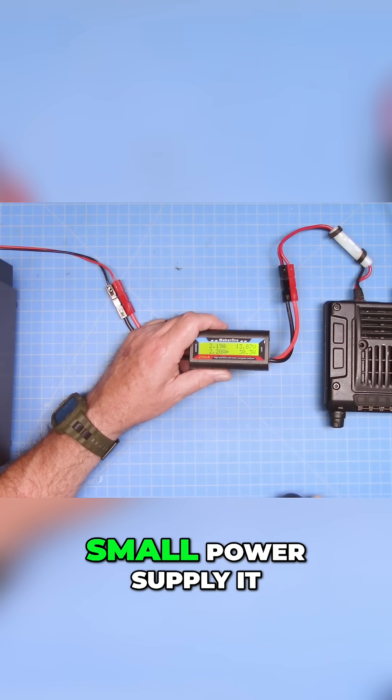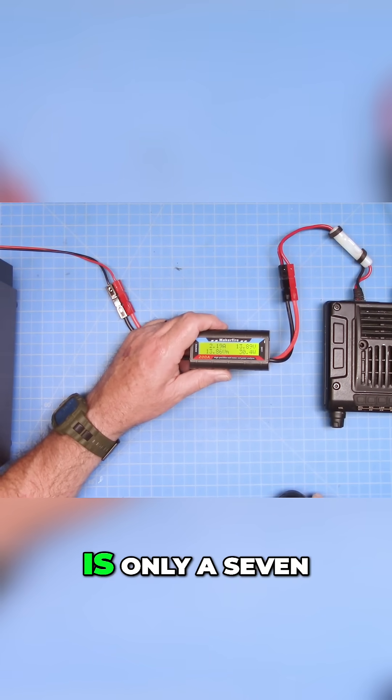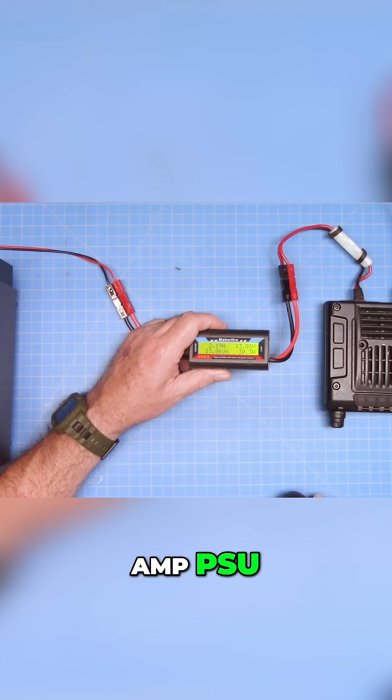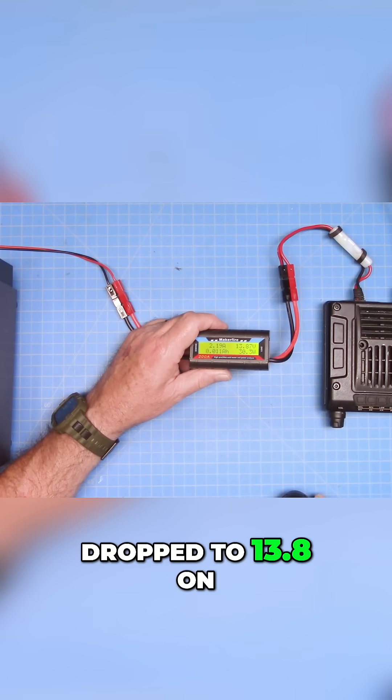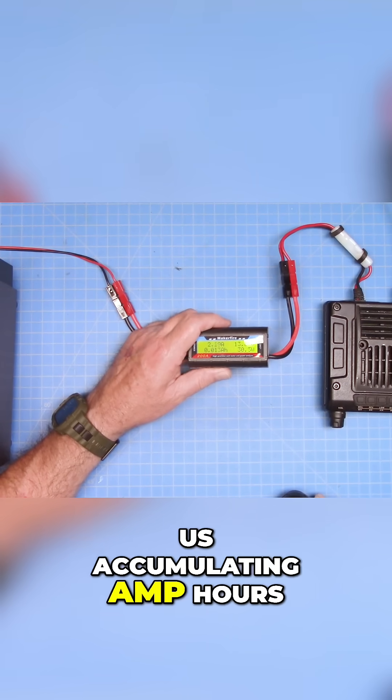This is a very small power supply. It is only a 7 amp PSU. So we are currently pulling 2.19 amps and our voltage has dropped to 13.8 on transmit. You can see us accumulating amp hours over here in our watt hours, the total amount of wattage we're pulling.